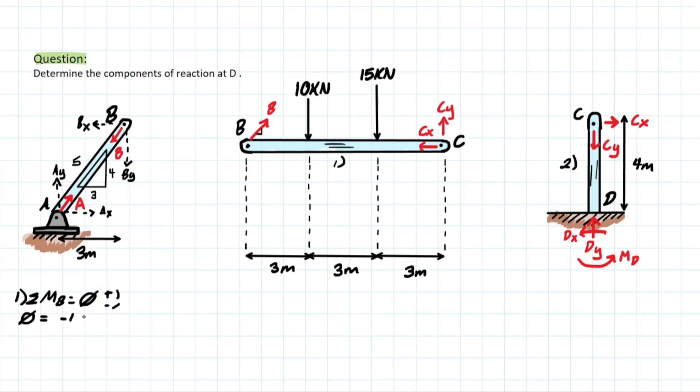So we have that negative 10 kilonewtons, which is three meters away from B minus the 15 as well because they're both going clockwise and that is going to be six because it's three plus three. Then we also have the positive C-Y which is going in the opposite direction and that's nine meters away. Meaning C-Y is going to equal 13.33 kilonewtons.